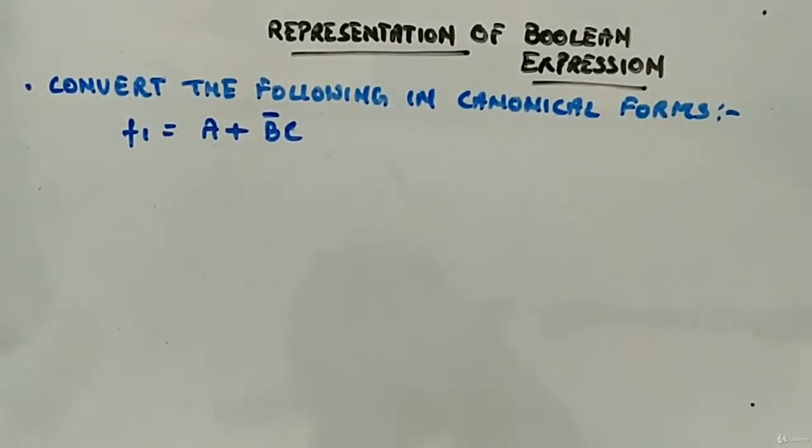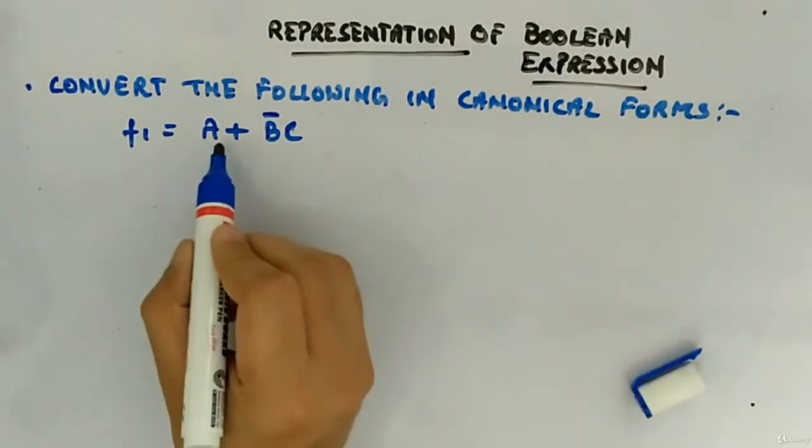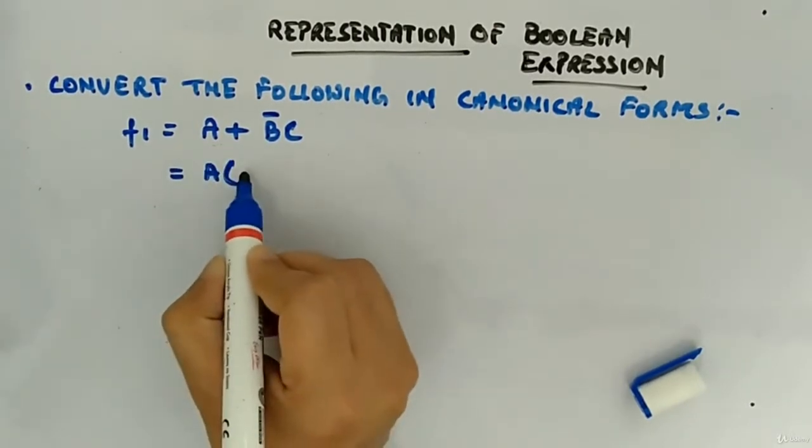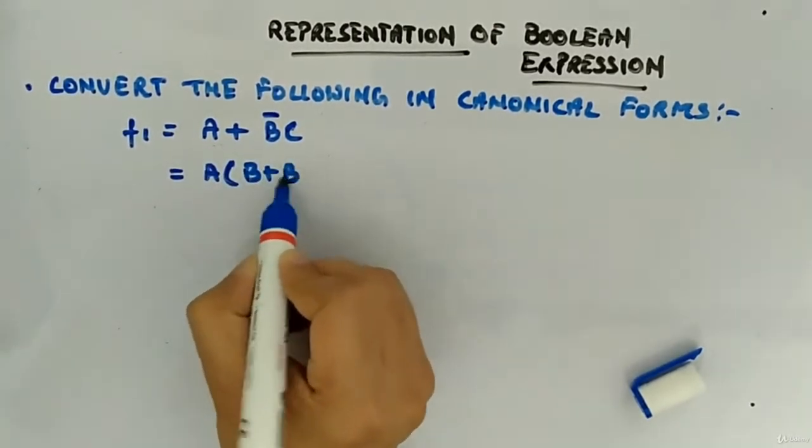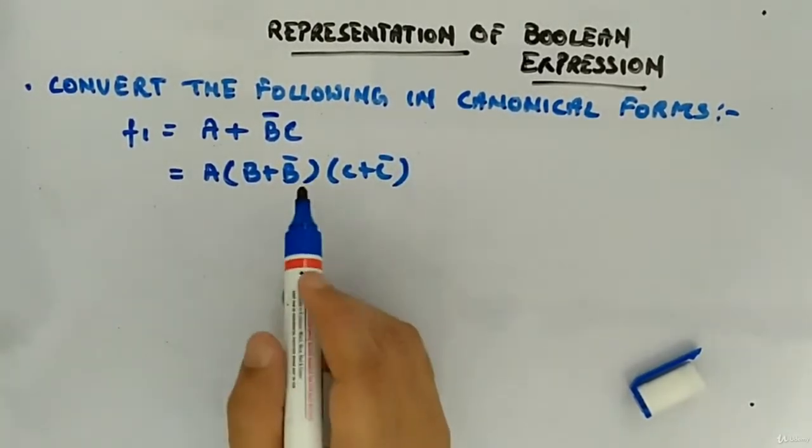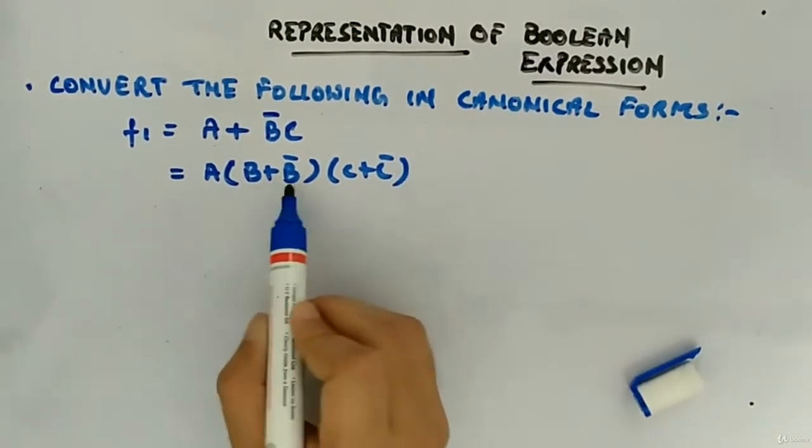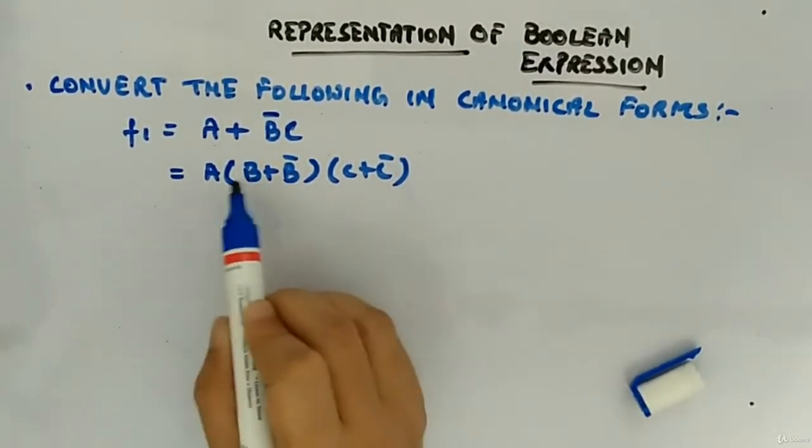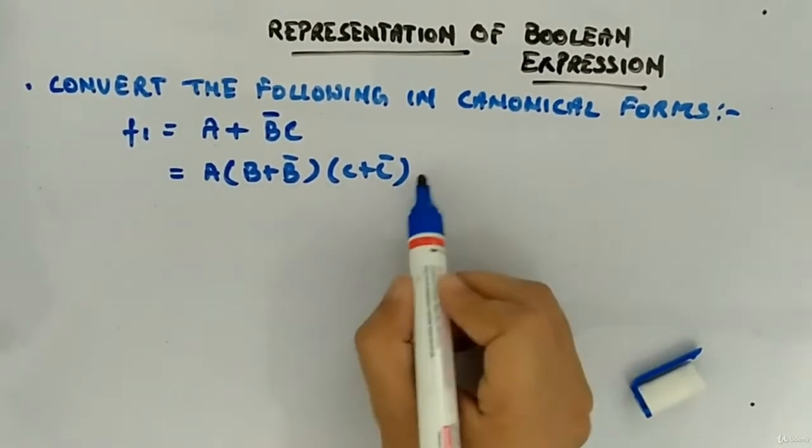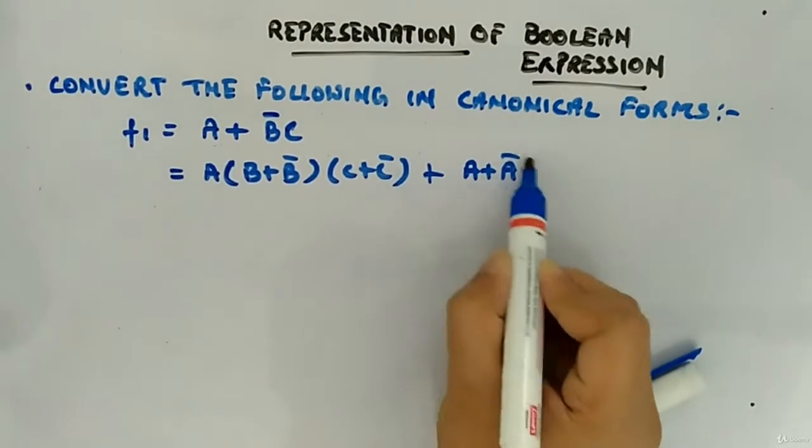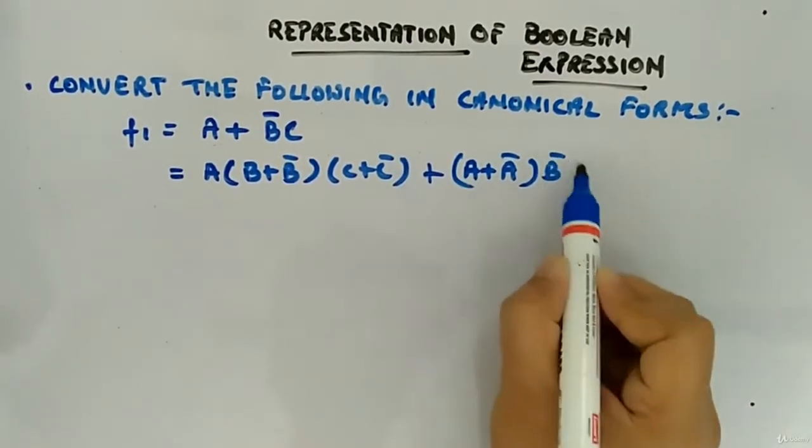So we will convert it and you have to convert in this fashion all the time. What we will do is since B and C are missing in this term, we will multiply it with B plus B bar and C plus C bar, because both the terms are missing. And with the OR law, if you remember, this will be one. B plus B bar will be one, C plus C bar will be one. So ultimately it will be A only. Similarly, here A is missing, so what you will do? A plus A bar. B bar C.